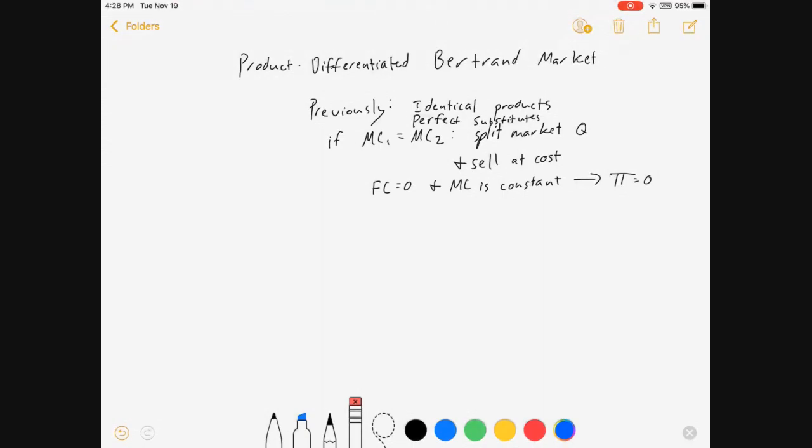I've done a couple of Bertrand videos already. Before, we always had identical products that were perfect substitutes with each other. So if our firms had symmetric costs, they would split the market quantities and sell at cost. Which, if we simplified the model and said no fixed cost and a constant marginal cost, profit was zero.